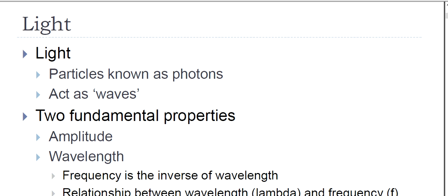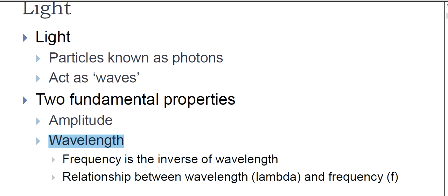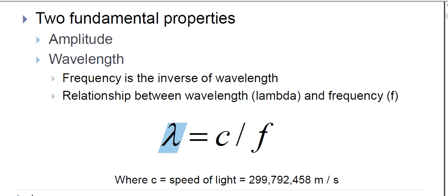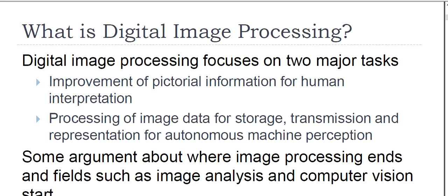In light, the particles are known as photons and they act as waves. There are two fundamental properties: amplitude and wavelength. Frequency is the inverse of wavelength. The equation between wavelength and frequency is: lambda equals c divided by f, where lambda represents wavelength, f represents frequency, and c is the speed of light — 299,792,458 meters per second.